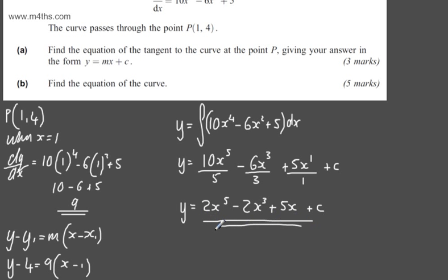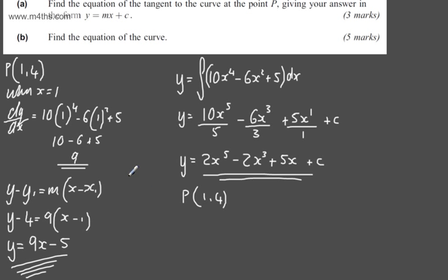We can find the value of c by taking point P which is (1, 4). We'll substitute these in to find c. So 4 = 2(1)^5 - 2(1)^3 + 5(1) + c. This gives us 4 = 2 - 2 + 5 + c. So c = -1.